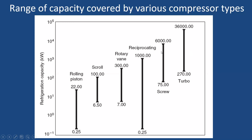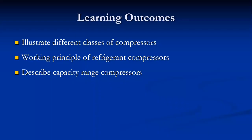Screw compressors are found in many air-conditioning applications, including large units of around 1000 TR capacity. Turbo compressors, especially centrifugal compressors, are extensively used for medium and large-scale air-conditioning applications, since they handle large volume flow rates effectively and stages can be added to increase compression ratio.